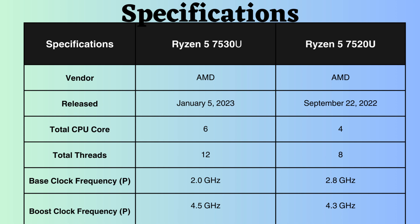The Ryzen 7530U was released 5 months after the introduction of the Ryzen 7520U. The Ryzen 7530U is equipped with 6 cores and 12 threads, whereas the Ryzen 7520U has 4 cores and 8 threads. The greater number of cores and threads allows the processor to handle multiple tasks simultaneously and efficiently.